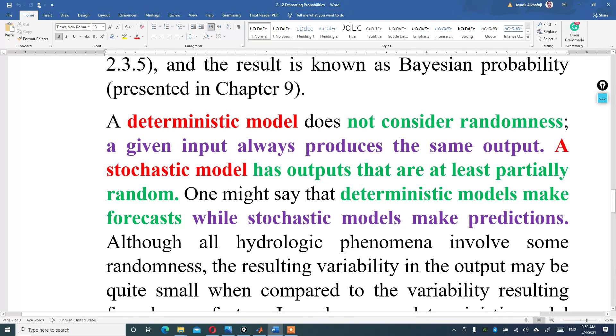Deterministic model does not consider randomness، يعني هذا الموضوع ما يعتمد على الاعتبارات العشوائية. هذه الأبارات من كتاب Applied Hydrology by Vinti. ما يعتبر المن إلى حالة randomness. A given input always produces the same output، إذا أدنى input راح تنتج نفس output، يعني input والoutput بنفس النسق.